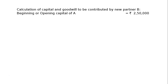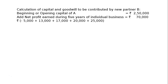Beginning or opening capital of A is Rs. 2,50,000. A started the business and after 5 years, add profit during 5 years of individual business. In year 1, there was a loss of Rs. 5,000. In year 2, a profit of Rs. 13,000. In year 3, the profit was Rs. 17,000. In year 4, there is a profit of Rs. 20,000. And in year 5, there is a profit of Rs. 25,000.